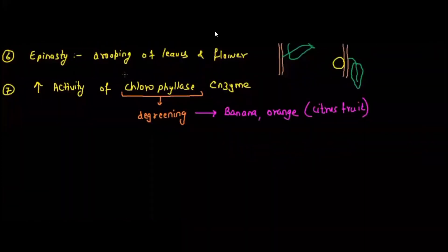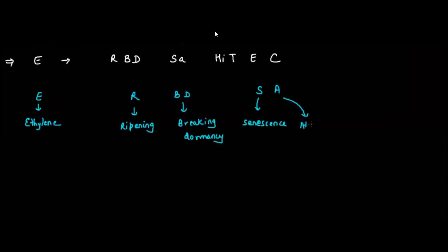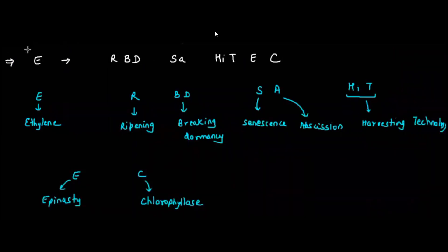Let's understand the shortcut how you can remember the functions of ethylene. I give you one sentence, that is ERBD SA HIGH TECH. E stands for ethylene, R stands for ripening, BD is for breaking dormancy of potato tuber, SA stands for senescence and abscission, HIGH TECH - H is harvesting technology, E stands for epinasty, and C stands for chlorophyllase enzyme. So if you remember ERBD SA HIGH TECH, you can easily remember functions of ethylene.